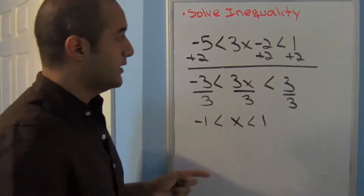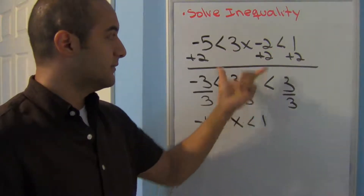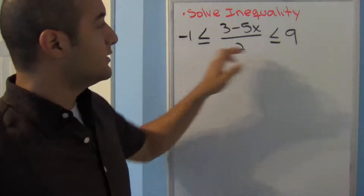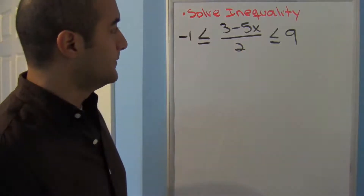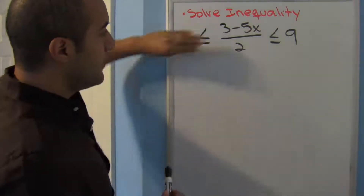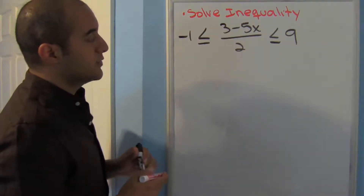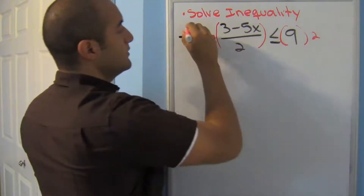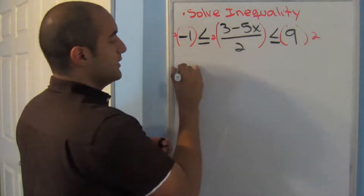Notice that my answer is between these two numbers — it's almost like a sandwich. That's what you get with less-than symbols on both sides. Now let's look at a different scenario: I still have less-than symbols, but there's a giant fraction — it's one big term. To get rid of that denominator I'm going to multiply everything by 2, including all three sides.